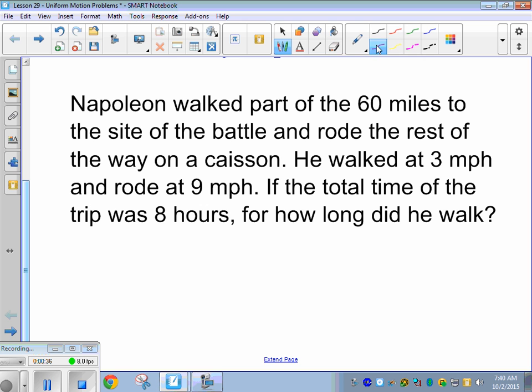So we have two distances, right? We're adding distance walking—he walked part of the trip—and distance riding because he rode part of the trip. The total miles is 60. So we're adding two different pieces to a total distance. And we always replace our distances with rate times time and rate times time.